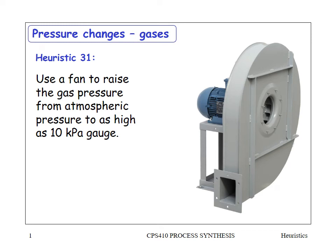In this section we will talk about pressure changes, starting with gases. Heuristic 31 says use a fan to raise the gas pressure from atmospheric pressure to as high as 10 kPa gauge. Generally, whenever you can use a centrifugal fan it's a nice cheap and easy way to move gas rather than compress it. 10 kPa gauge is only about one meter of head, so it is essentially for the lowest pressure applications — just when you want to blow something. The illustrated fan has a large diameter, so it would probably be capable of delivering the full 10 kPa gauge.